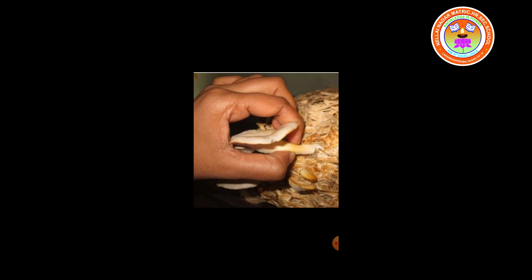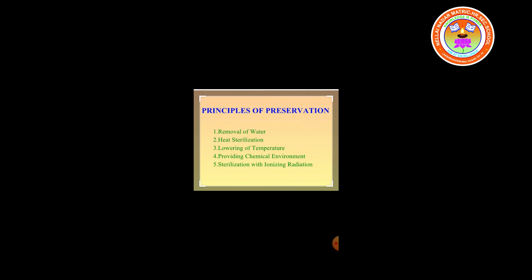So far, we discussed the different stages of mushroom cultivation: composting, spawning, casing, pinning, and finally harvesting. Now, preservation — discoloration, weight and flavor loss are the main problems during harvesting of mushroom. Mushroom should be preserved through various methods. The principles of preservation include: removal of water, heat sterilization, lowering of temperature, providing chemical environment, and sterilization with ionizing radiation.